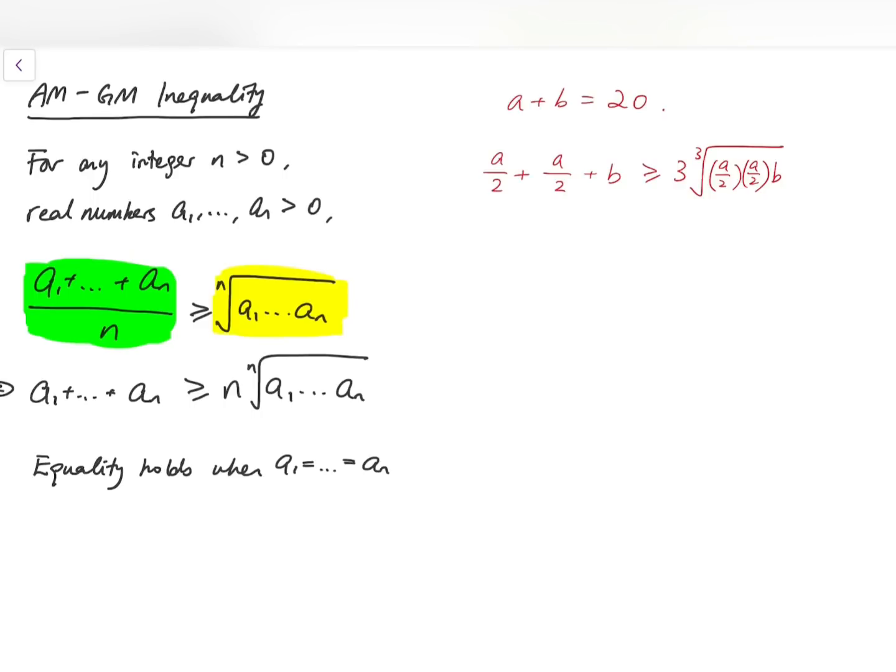So on the left side, we still have a plus b, which is 20. And now, at the right, we have 3 times the cube root of a squared b over 4. So what we have to do is to simplify this inequality.